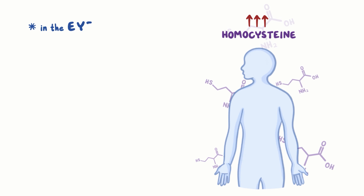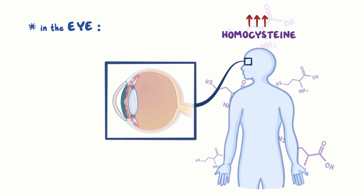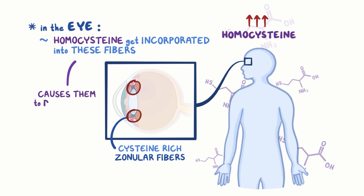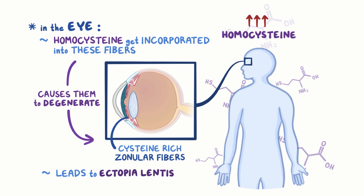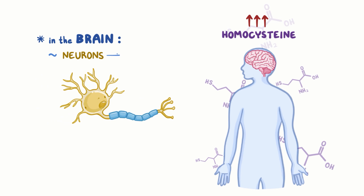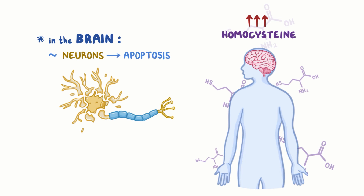Homocysteine can also build up in the eye. The lens of the eye is held in place by a ring of cysteine-rich fibers called zonular fibers. When cysteine can't be synthesized, homocysteine gets incorporated into these fibers instead and causes them to degenerate, which leads to ectopia lentis, or the downward dislocation of the lens. Finally, when homocysteine builds up in the brain, it causes neurons to undergo apoptosis, or programmed cell death, which could lead to developmental delay or neurodegeneration.